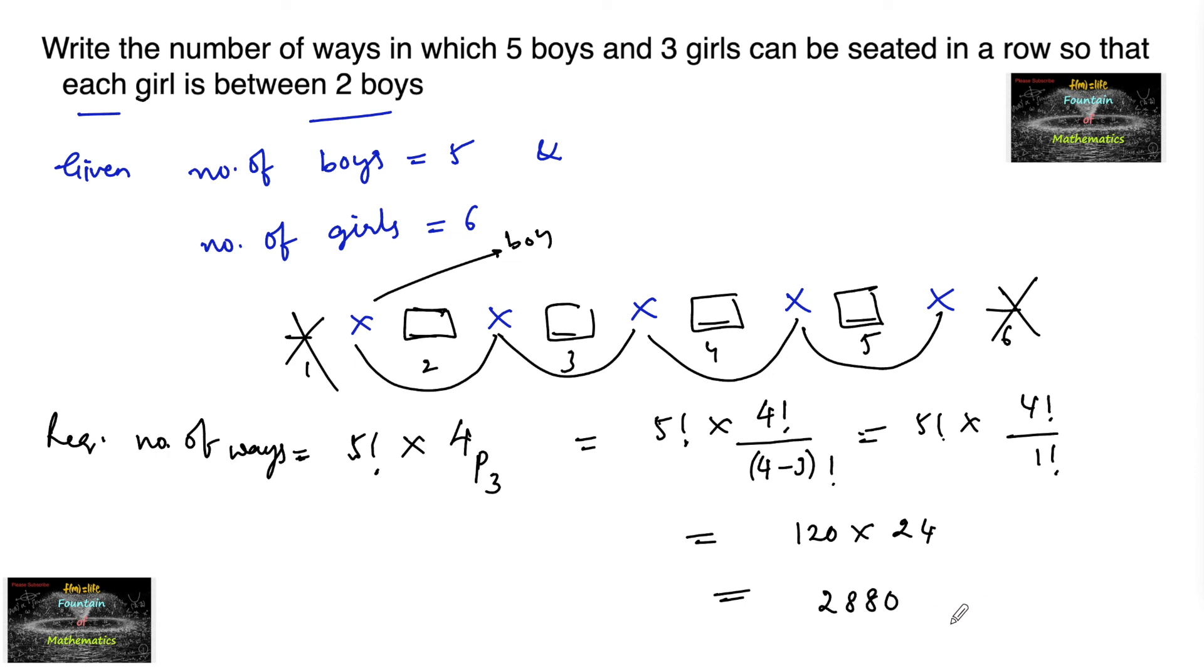So there are 2880 ways of arranging 5 boys and 3 girls such that each girl is between 2 boys. Thank you.